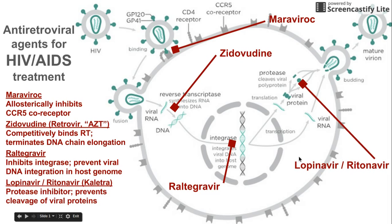One last set of drugs that we use is Lopinavir and Ritonavir, which block the protease activity. They inhibit protease, meaning that when this polyprotein is synthesized by the cell, we are unable to break it down and build a new virus out of it.